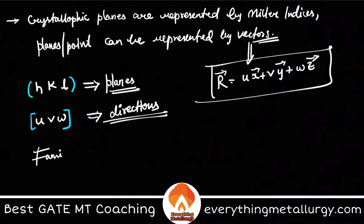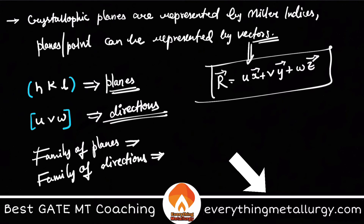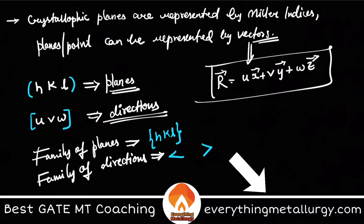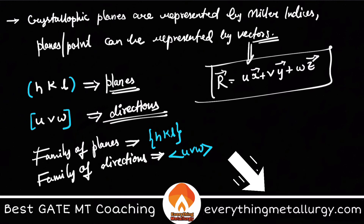There is also something called a family of planes or family of directions. A family is nothing but a set of identical planes — planes which are parallel to each other or identical to each other. All those planes taken together form a set called a family. Family of planes are represented by curly brackets {hkl}, and for directions we use angle brackets ⟨uvw⟩. So within a family {hkl} there may be many planes like (hk̄l), (h̄kl), and all their possibilities.